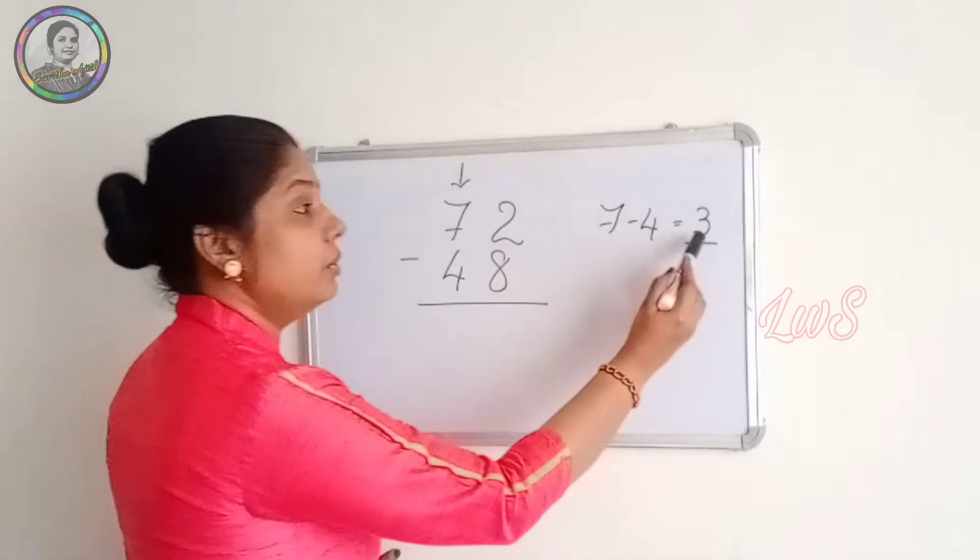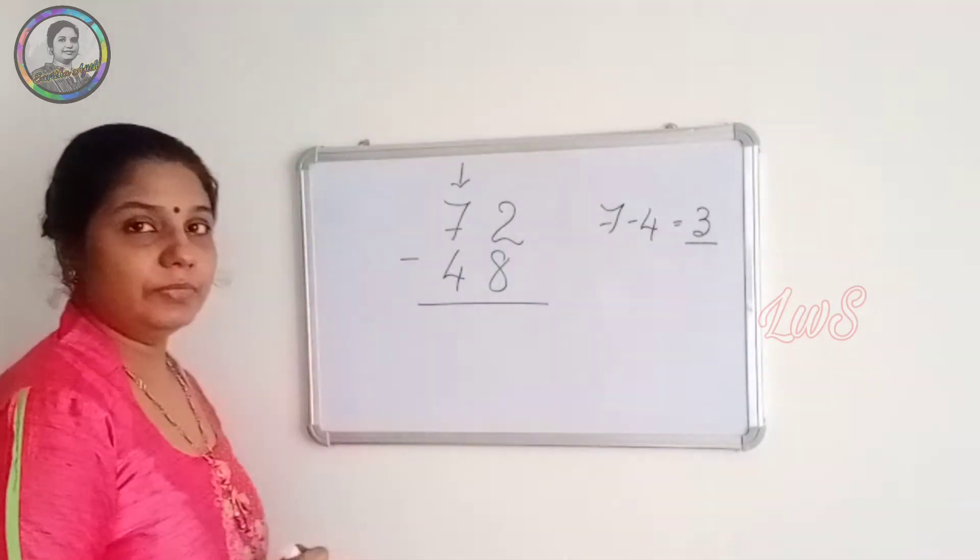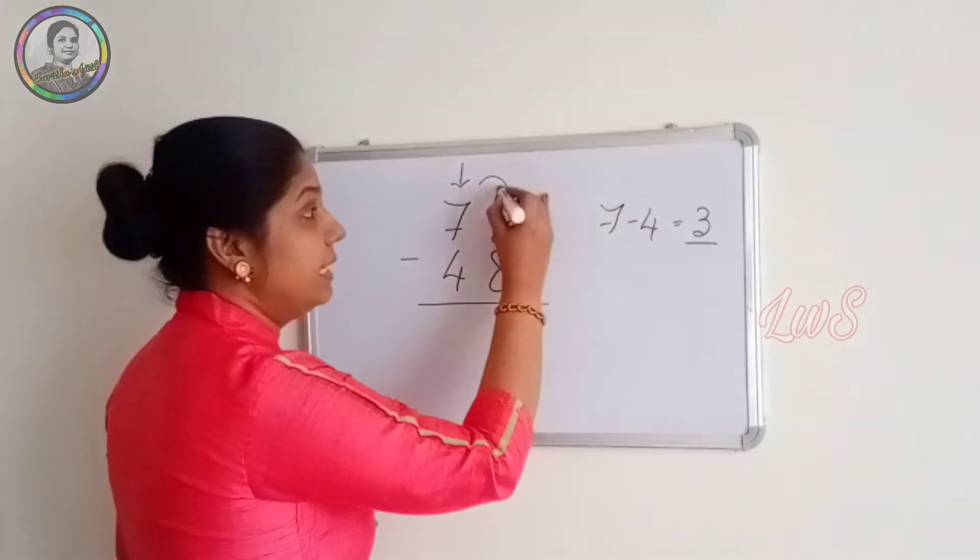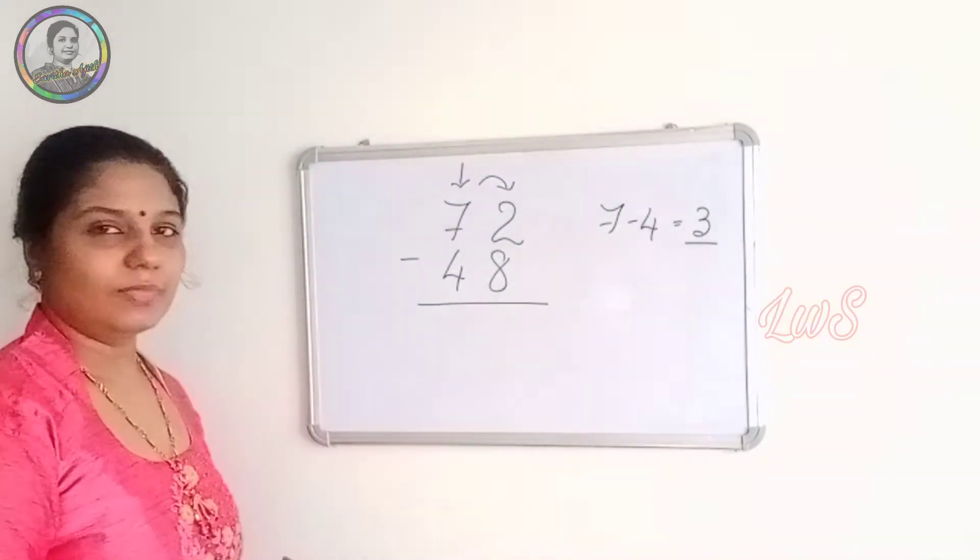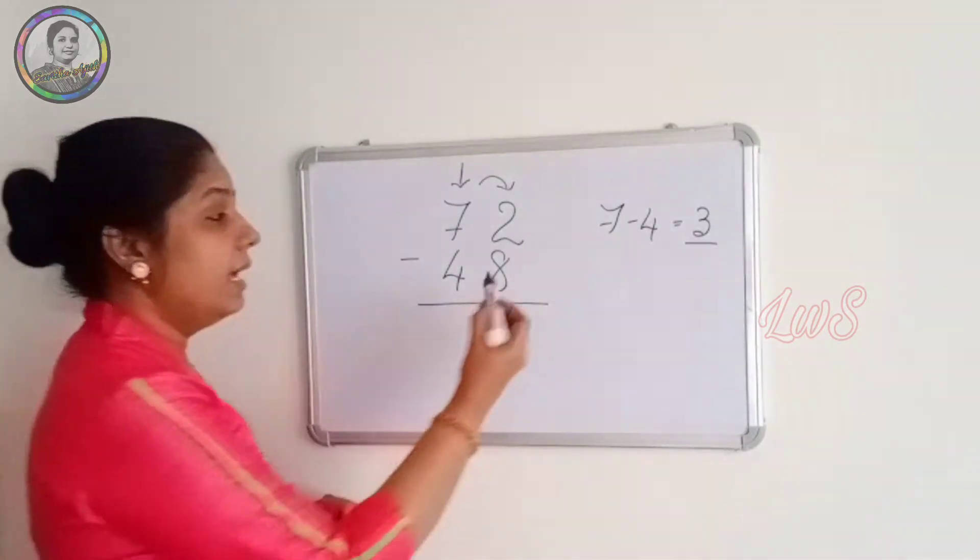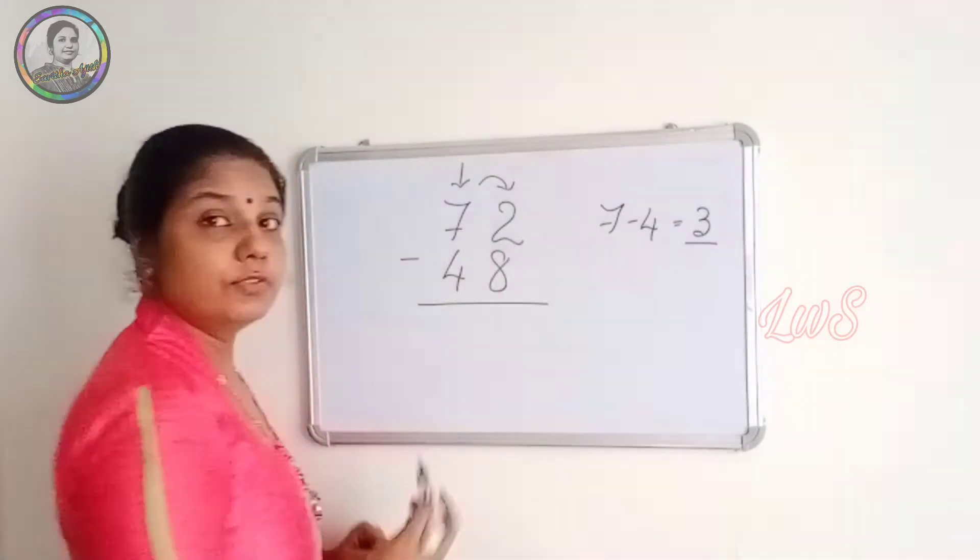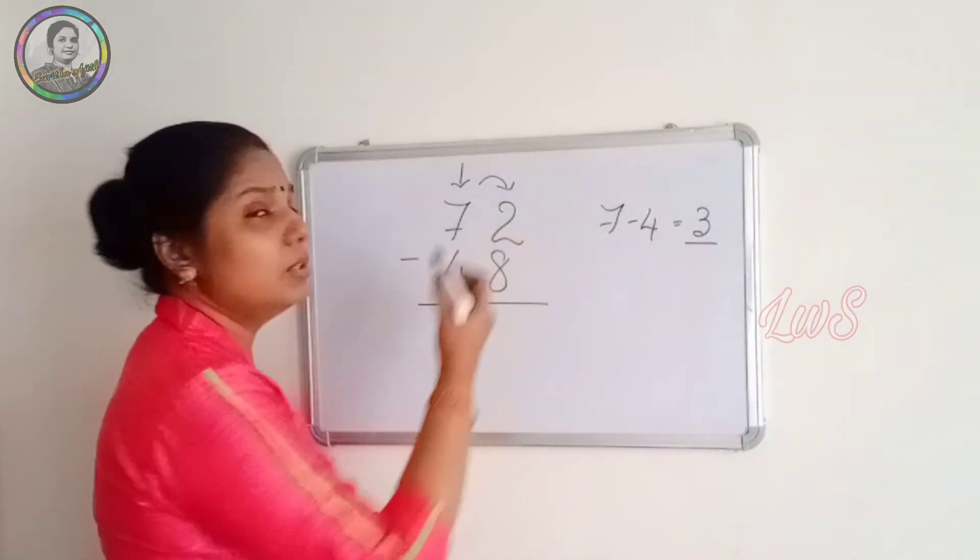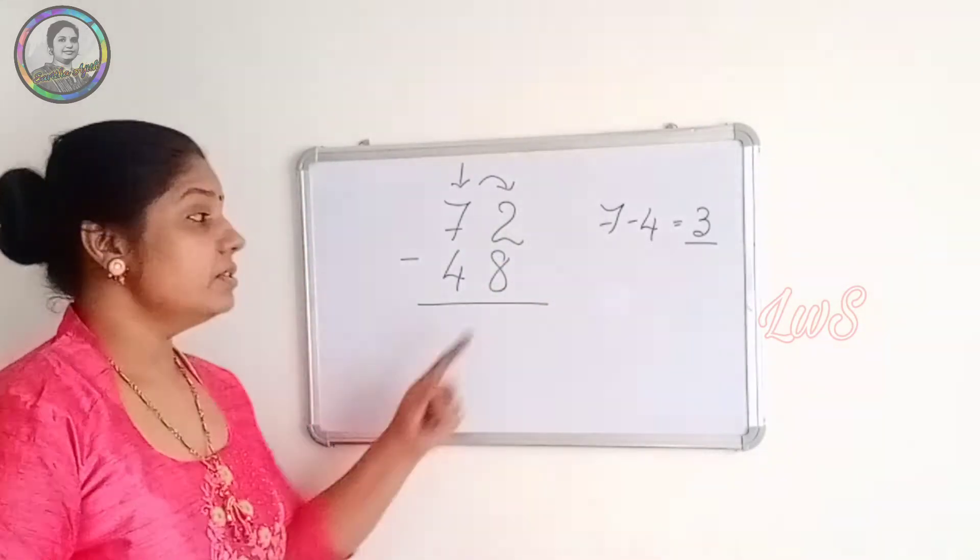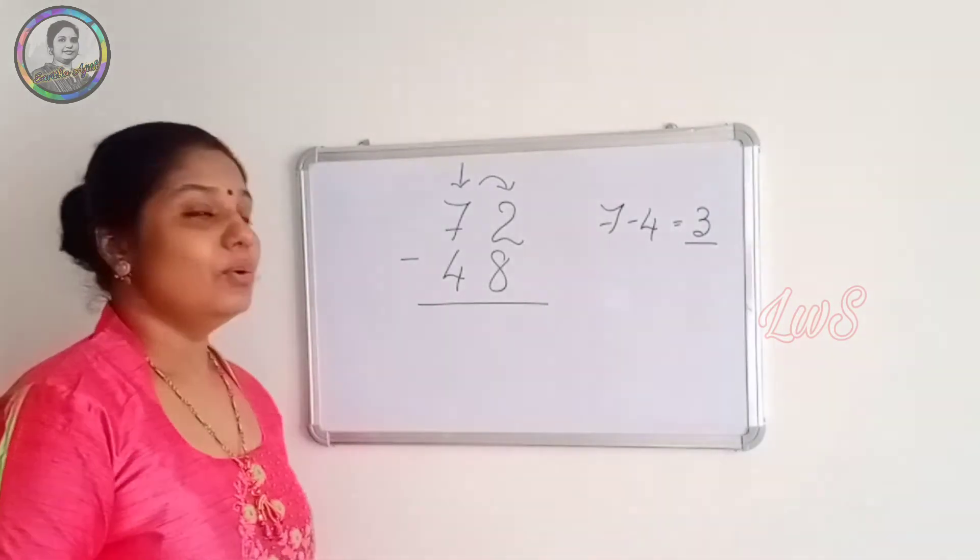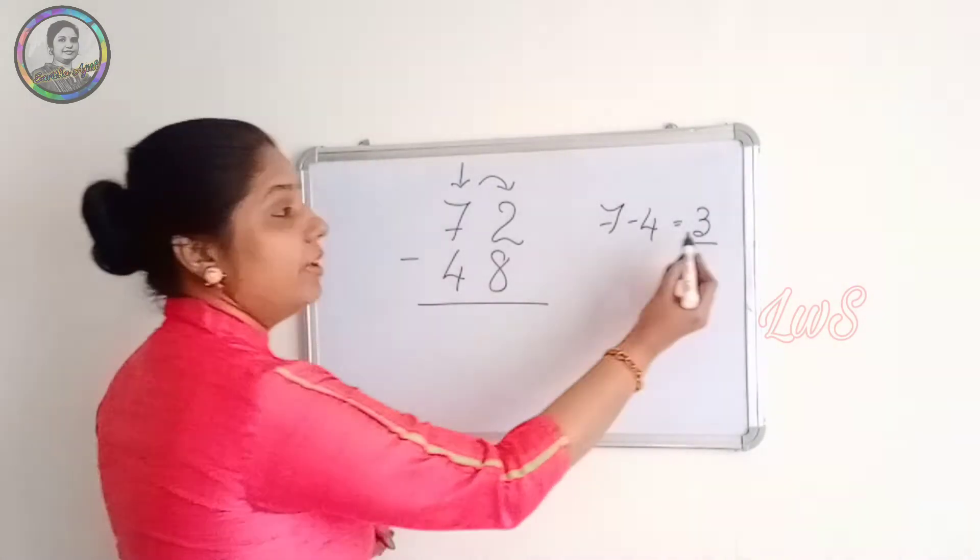But before writing this 3 here, what we do is we want to look for our neighbors. Who is the neighbor? 2 is the neighbor. And we have to subtract 8 from 2, which is not possible. This 2 is not having enough to subtract 8 from it. So what we do is,